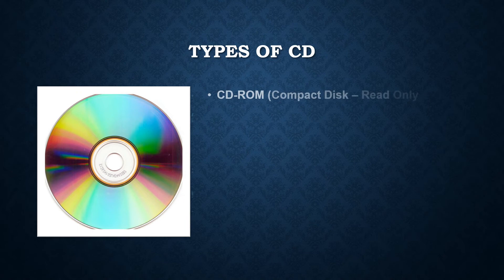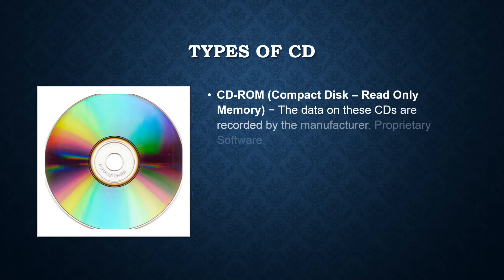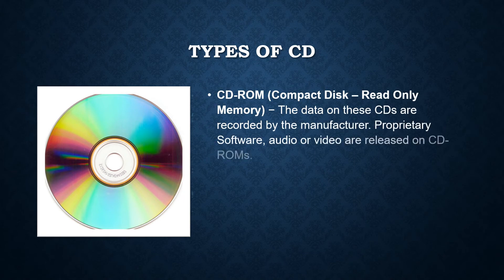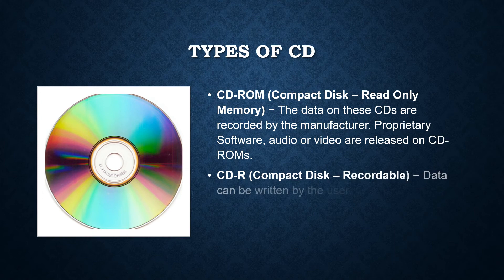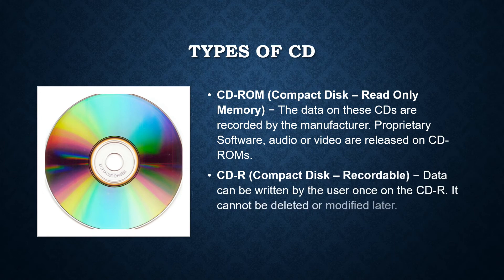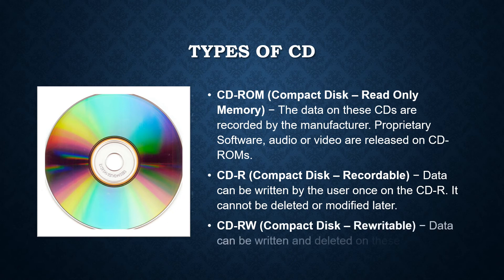Now let's see some types of CD. First is CD-ROM or Compact Disk Read-Only Memory. The data on these CDs are recorded by the manufacturer. Proprietary software, audio, or video are released on CD-ROMs. Next is CD-R or Compact Disk Recordable — data can be written by the user once on the CD-R, but it cannot be deleted or modified later. Another is CD-RW or Compact Disk Re-Writable, where data can be written and deleted on these optical disks again and again.